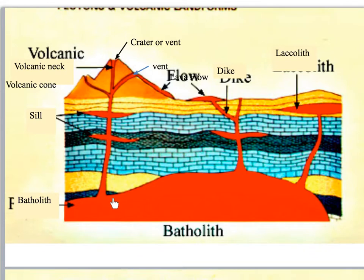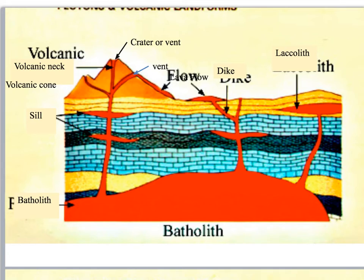Bringing it all together, here is your big batholith. Anything that is horizontal is considered a sill — we have a couple of sills here. Here's your laccolith — it's like a sill, but notice this top layer is bowed upward. Dikes cut across the intrusion. This is your crater or vent at the very top of the volcano, and it's relatively small — there is no caldera in this picture. Vents are openings where lava can flow out, and any lava currently flowing on the surface is considered a lava flow.